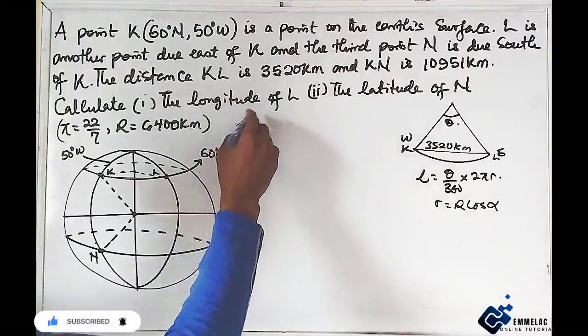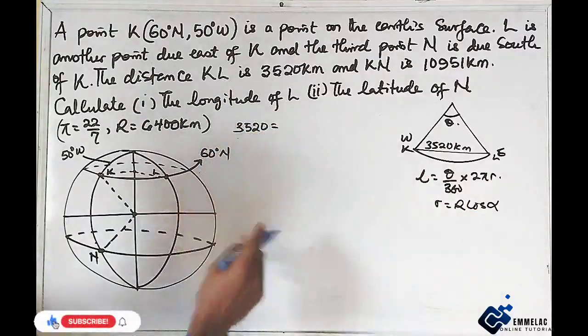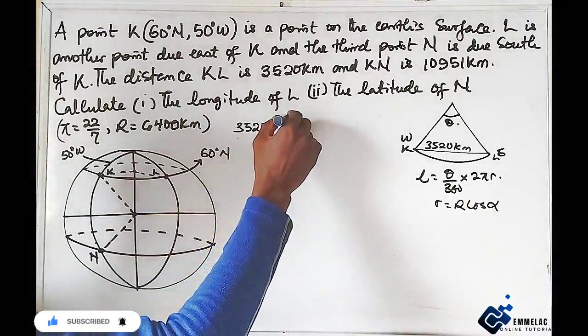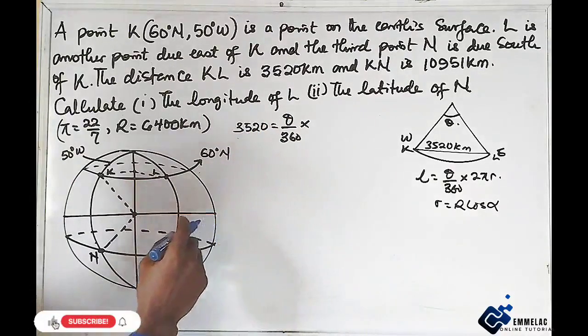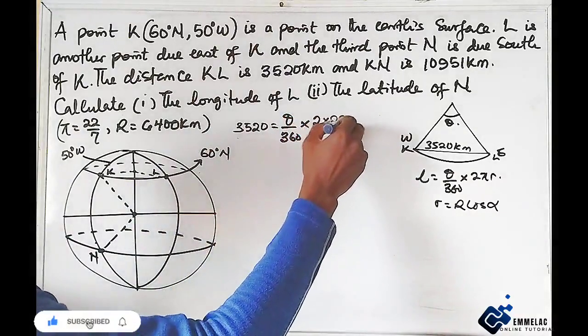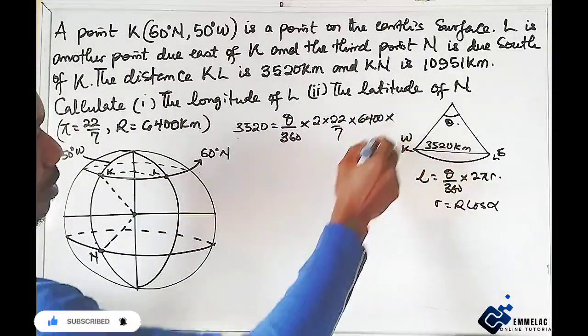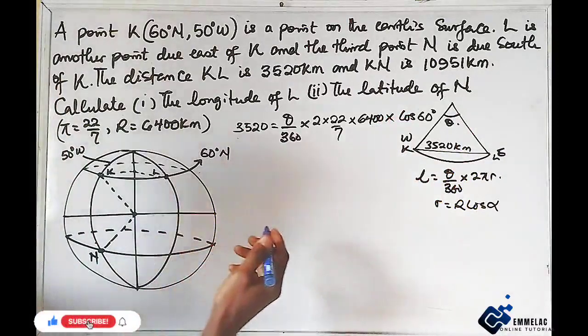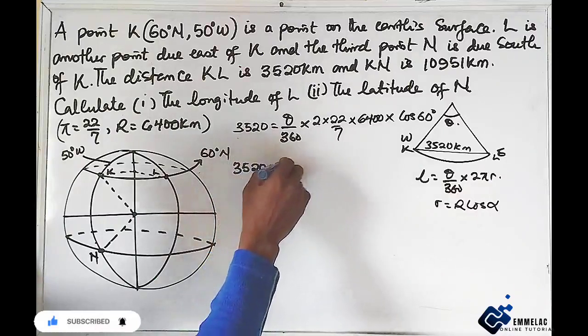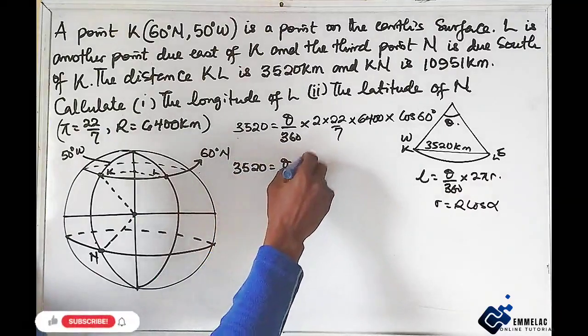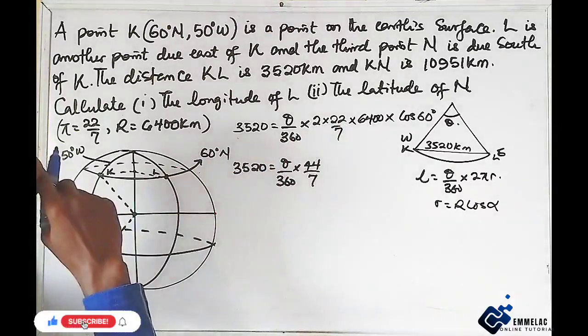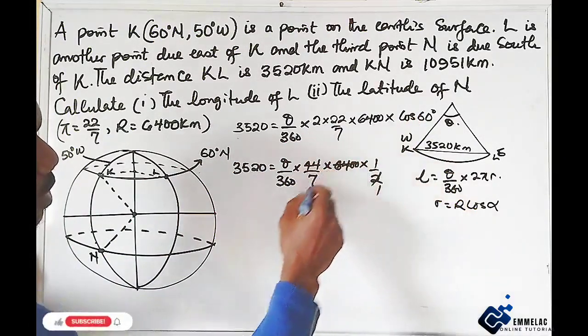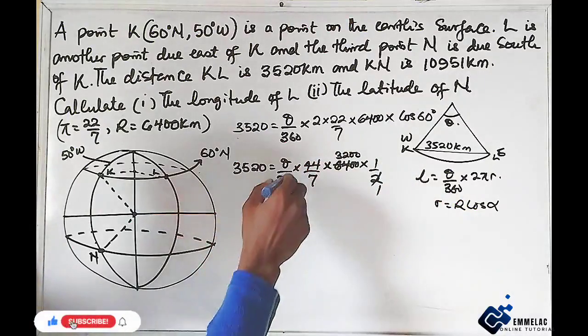Using this formula, KL equals 3520 equals theta over 360 times 22 over 7 times 6400 times cos 60 degree. Here we have 3520 equals theta over 360 times 44 over 7, because 22 times 2 is 44, then times 6400. Cos 60 will give you 1 over 2, so 2 in 6400 will give us 3200. We can eliminate this 0 here to reduce our workload.